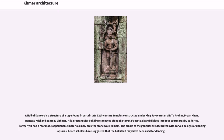A hall of dancers is a structure found in certain late 12th-century temples constructed under King Jayavarman VII — Ta Prohm, Preah Khan, Banteay Kdei, and Banteay Chhmar. It is a rectangular building elongated along the temple's east axis and divided into four courtyards by galleries. Formerly it had a roof made of perishable materials; now only the stone walls remain. The pillars of the galleries are decorated with carved designs of dancing figures, and scholars have suggested the hall itself may have been used for dancing.